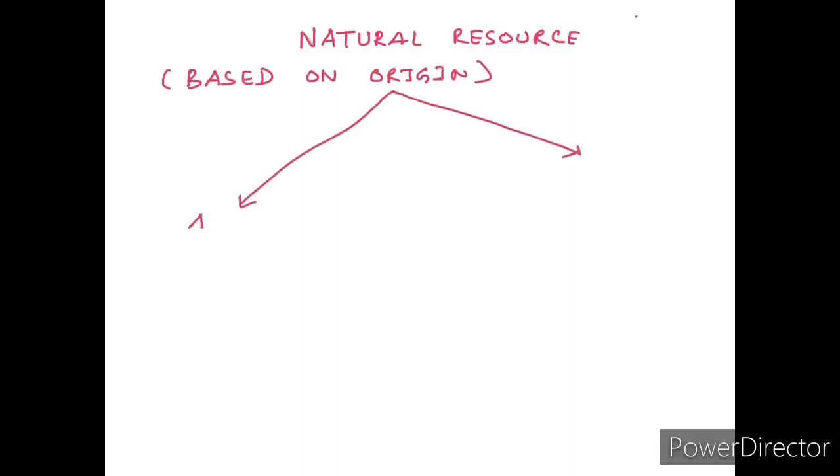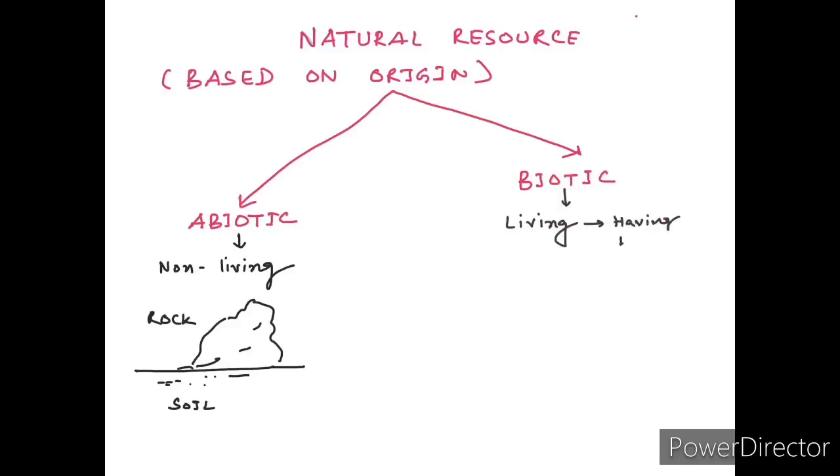Natural resources are further classified based on its origin. Abiotic resources are the resources which are not living, like soil and rocks. They don't have life and they are present in the environment. Next is biotic, that is living or having life, present in the environment like trees, plants, and animals. They are examples of biotic resources.